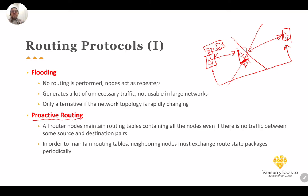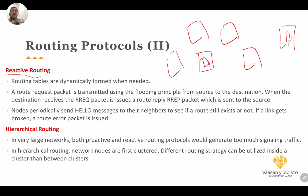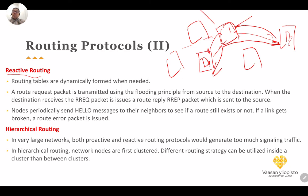In reactive routing, the routing table is updated only when a message needs to be sent. For example, if D1 needs to send to D3 but doesn't know where D3 is, D1 sends a route request using a flooding principle. Once the request reaches D3, D3 responds and the route reply comes back, establishing the routing path. This is called reactive routing. We also have hierarchical routing, which minimizes message exchange by dividing the network into clusters.